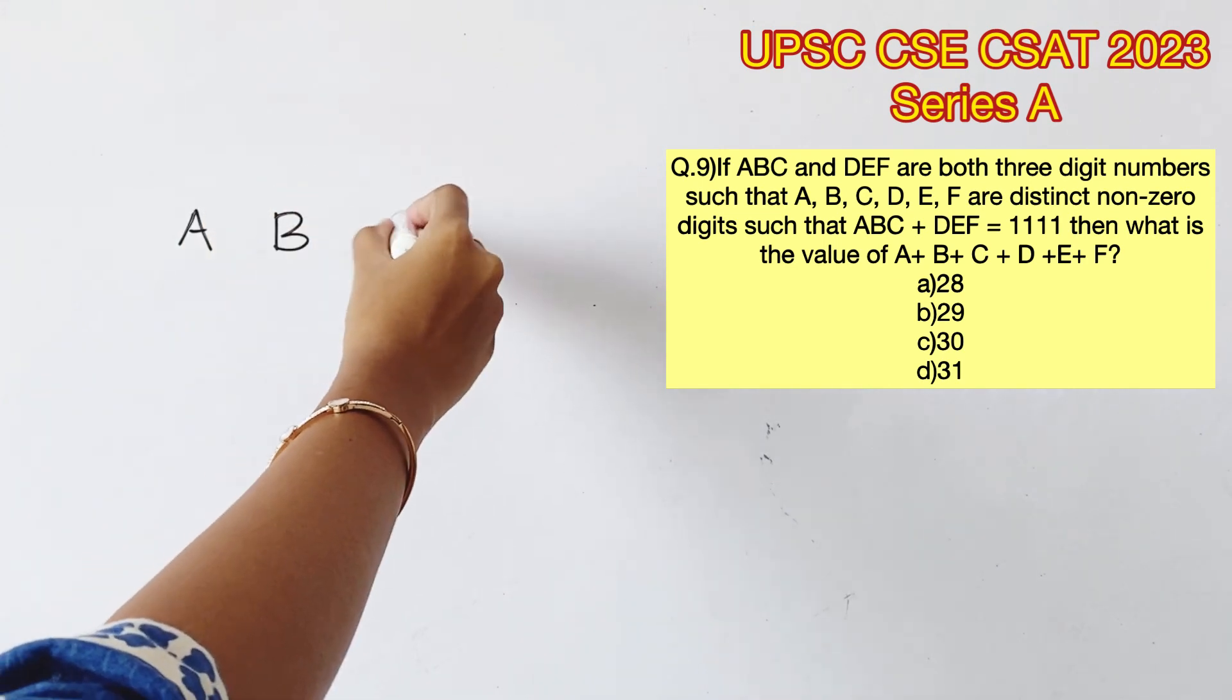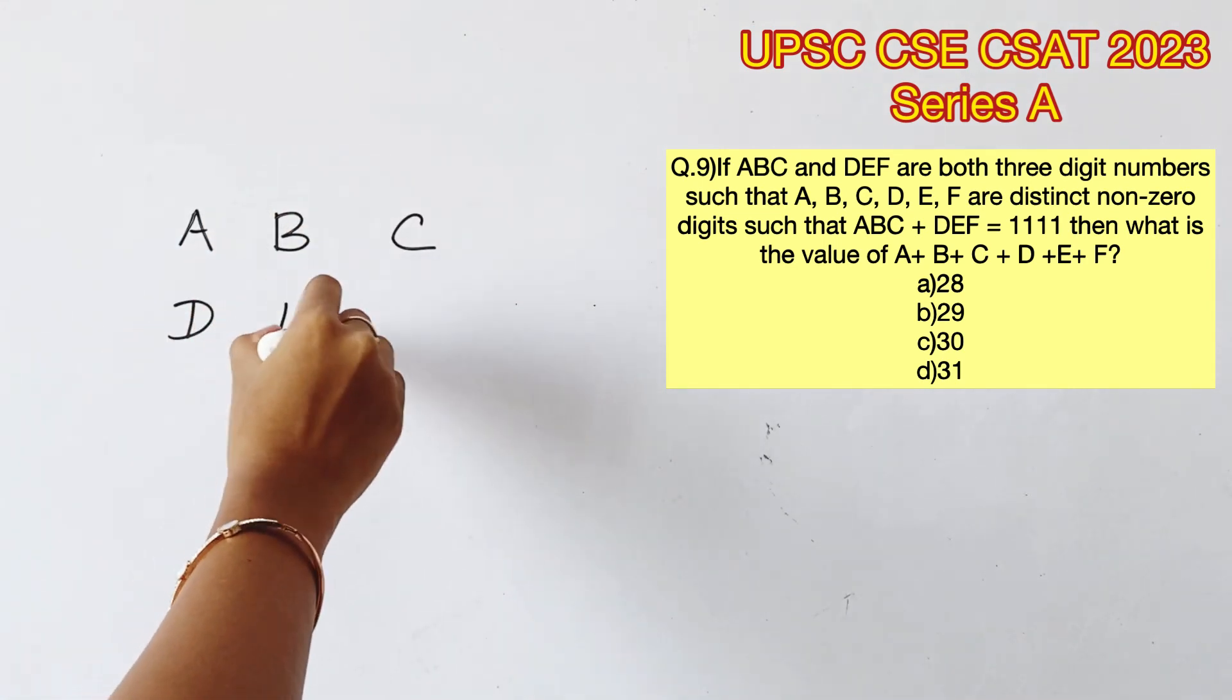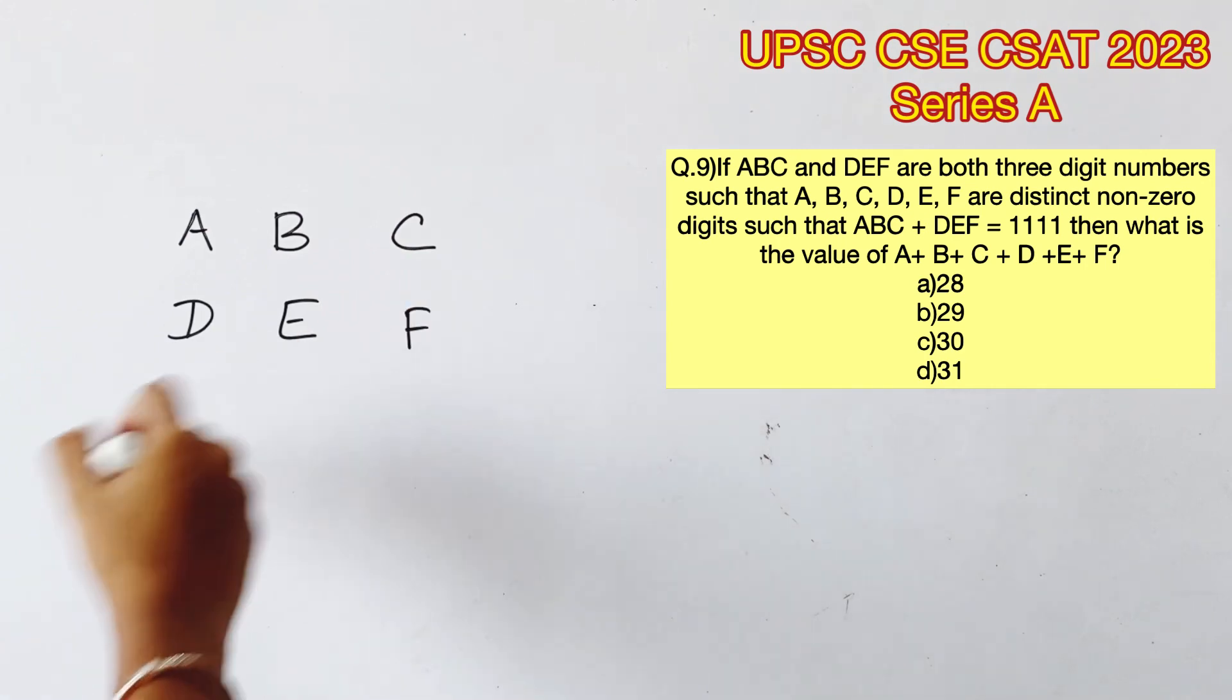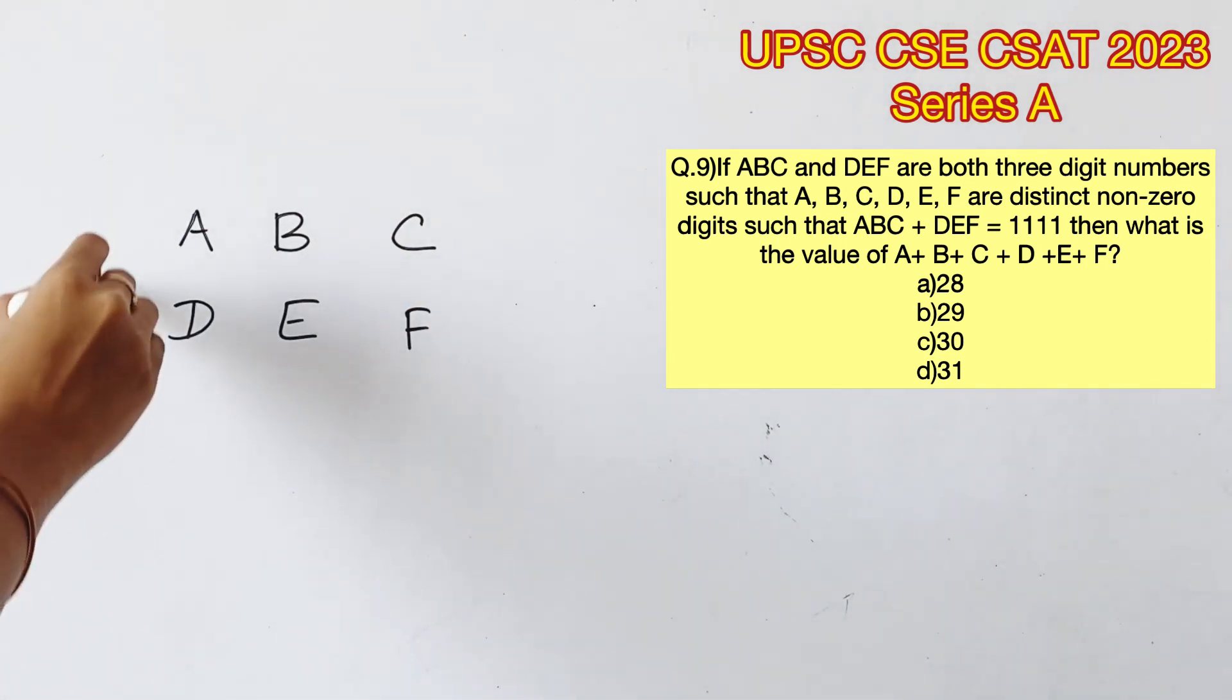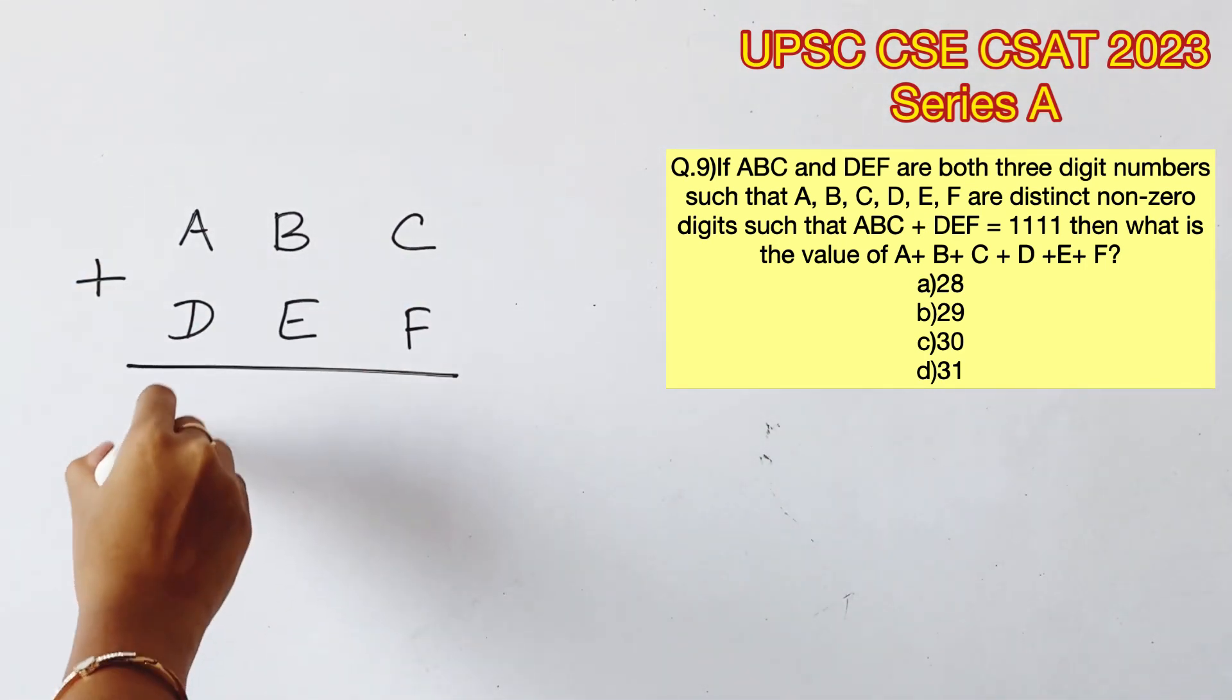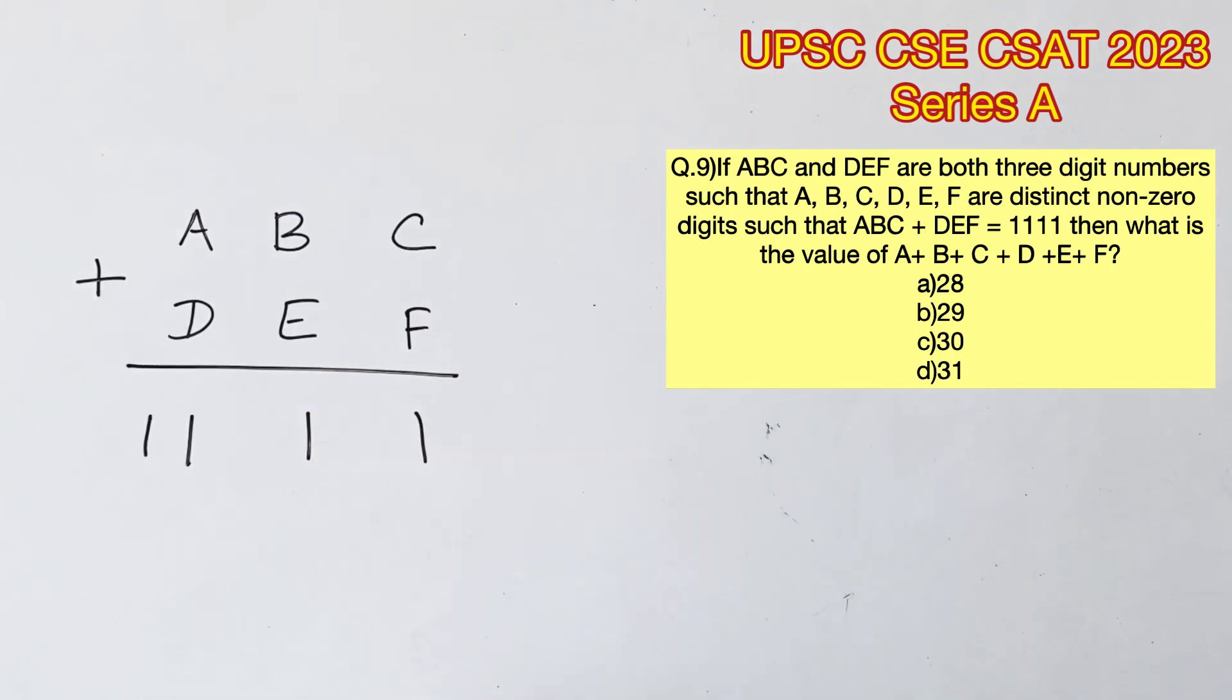ABC and DEF are both three-digit numbers such that A, B, C, D, E, and F are distinct non-zero digits, and ABC plus DEF equals 1111. Now we are supposed to find the sum of all the digits, that is A+B+C+D+E+F.